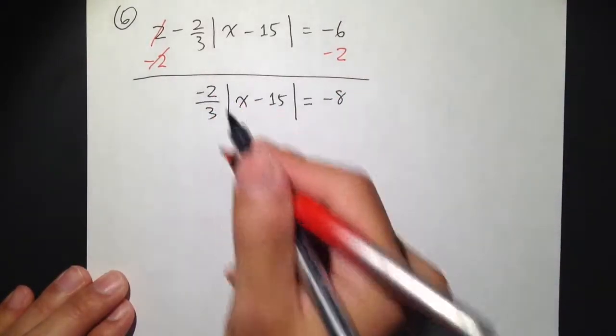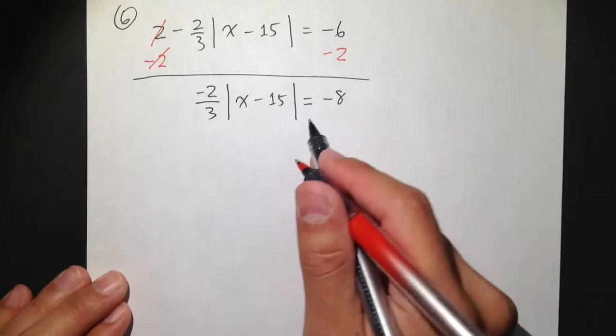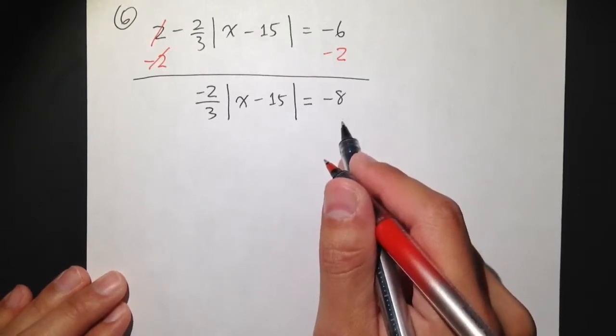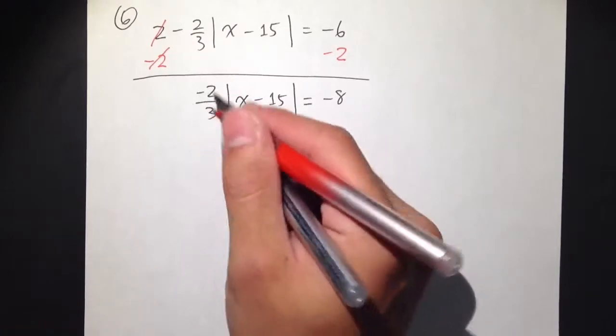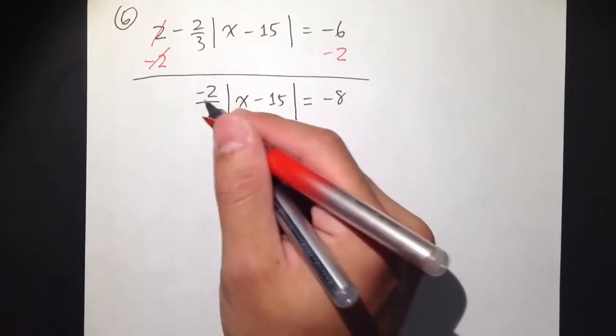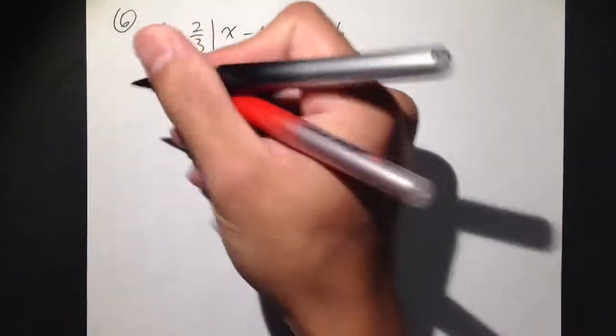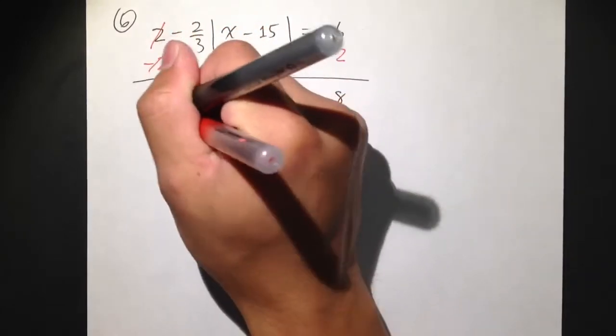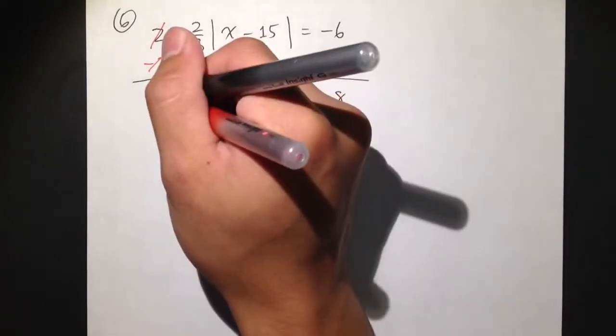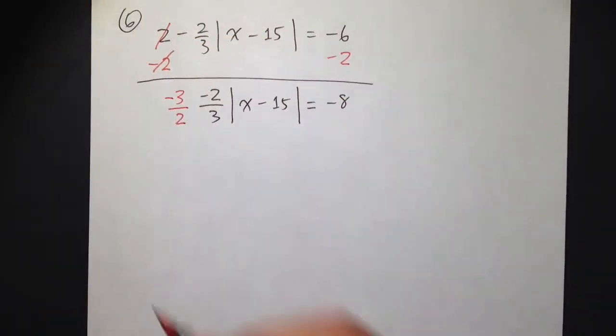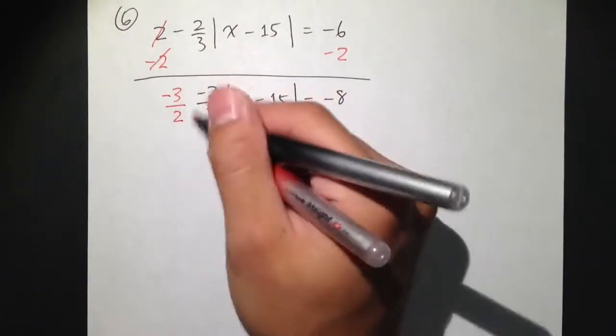Then I have the fraction times this absolute value is equal to negative 8. To get rid of this negative 2 thirds, I have to multiply the reciprocal of this. That is, I am going to multiply by 3 over 2. And since this is a negative, let's make that negative as well, because I want to have just a positive 1 altogether.